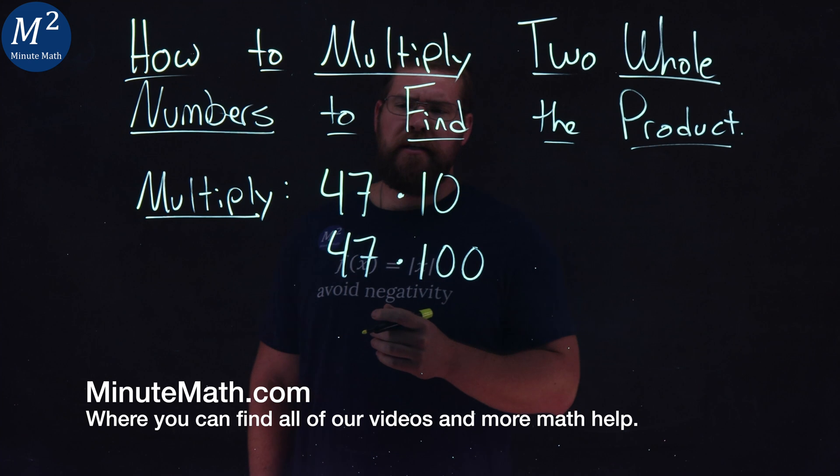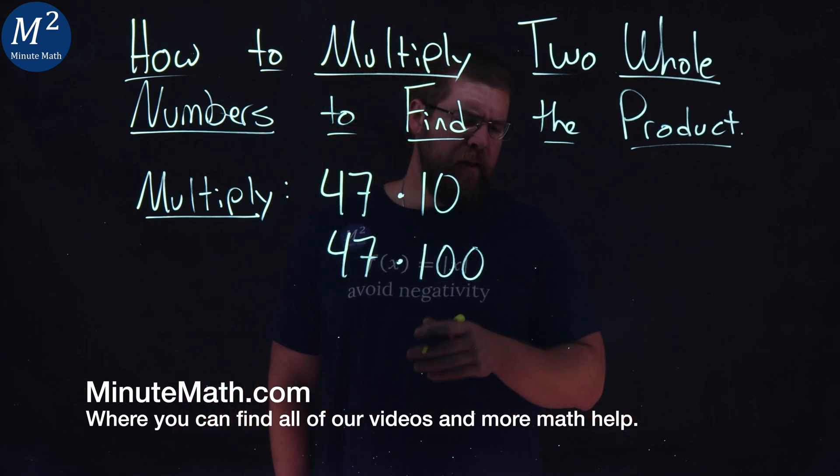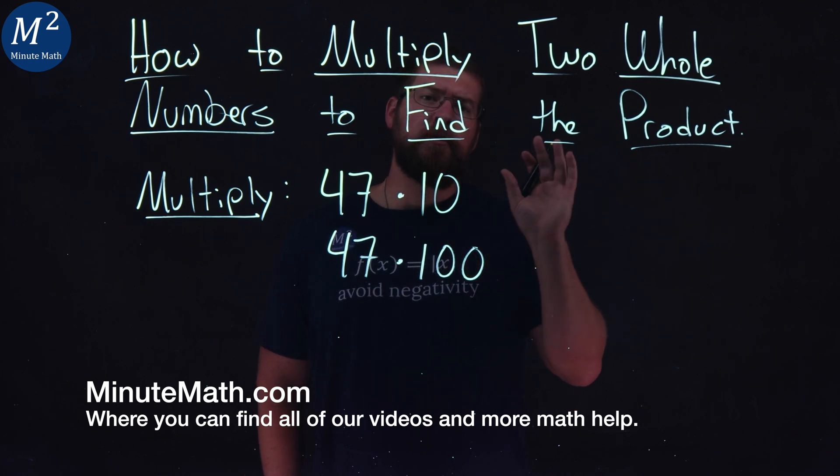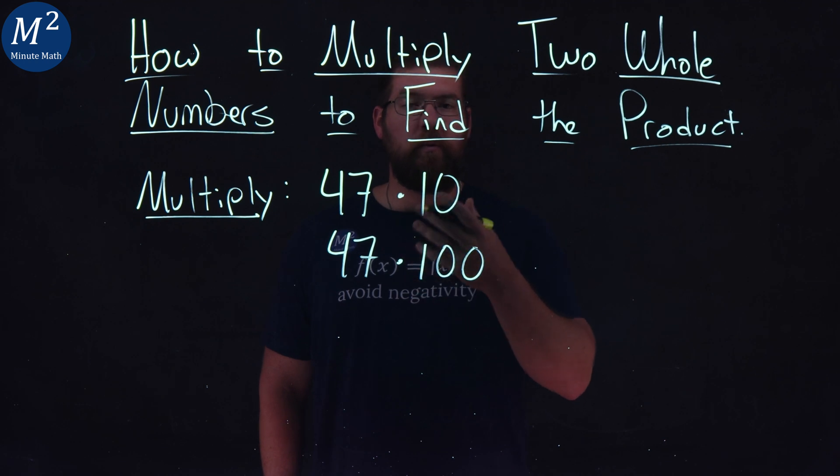We're given two examples here. We want to multiply 47 times 10 and 47 times 100. Now there's a quick trick for this, but I'm going to use our traditional method to show how we can do this quickly in the future.